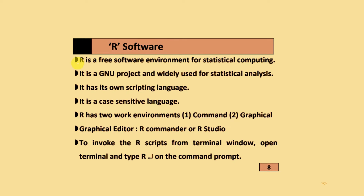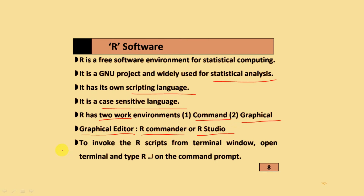The next topic is R software. It is a free software environment for statistical computing. It is a GNU project used for statistical analysis. It has its own scripting language and is a case-sensitive language. R has two work environments: command and graphical. In the graphical editor, R Commander or R Studio is available. To invoke an R script from the terminal window, open the terminal and write the R command.